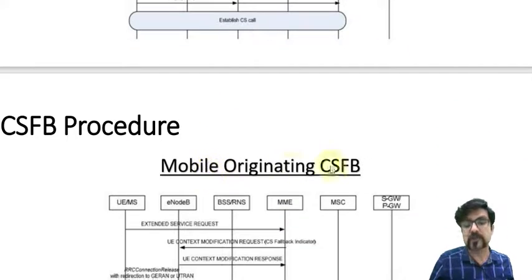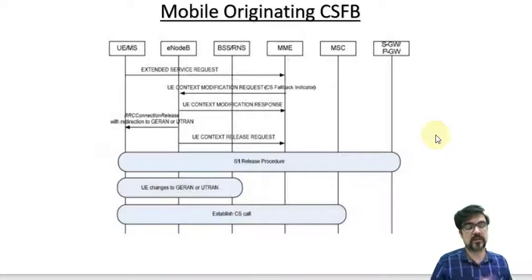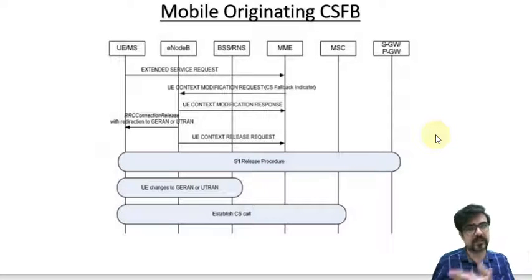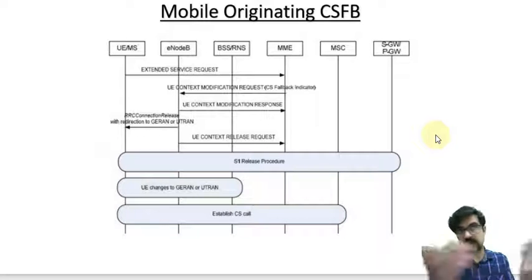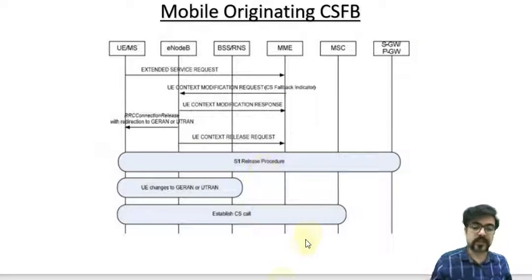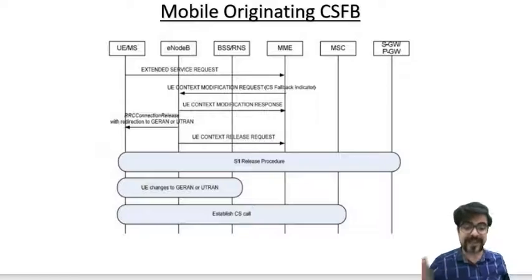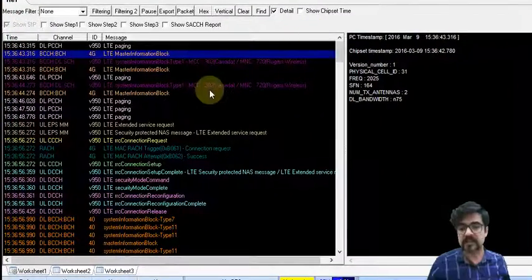For mobile originating, the situation is somehow easier. The steps are fewer because in this scenario, look at the previous scenario — there was a paging from the MSC towards the UE, but here the UE is going to try to make a phone call. So the steps are fewer but totally the same. And this is the steps of that. In order to have better understanding, let's go to Xcal to see the situation.